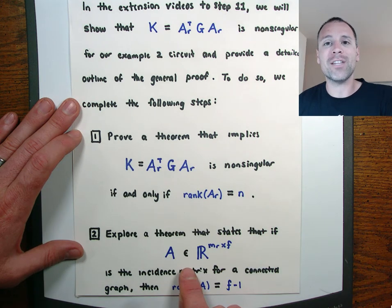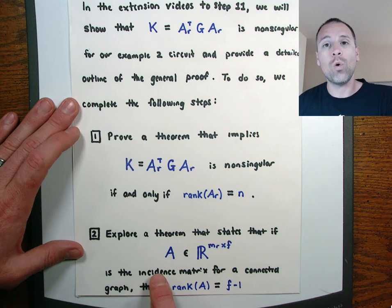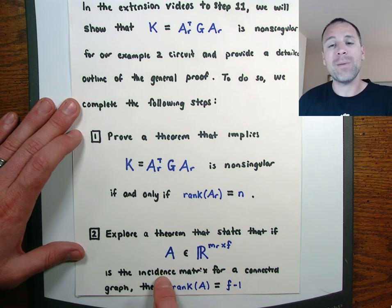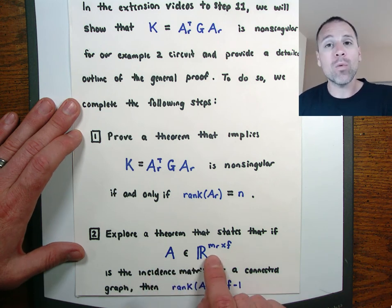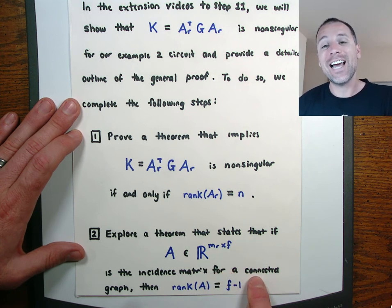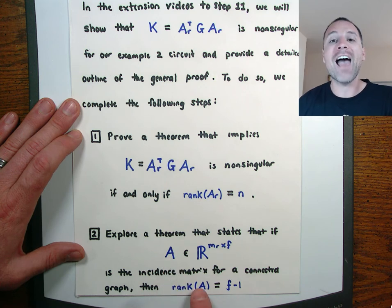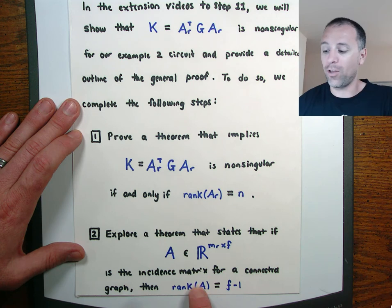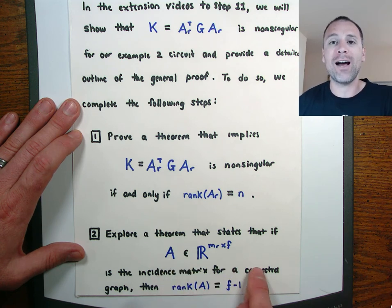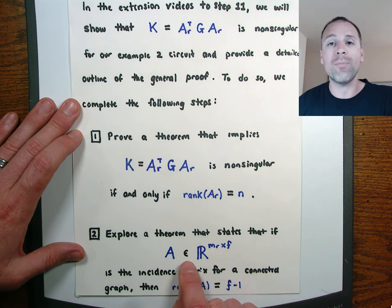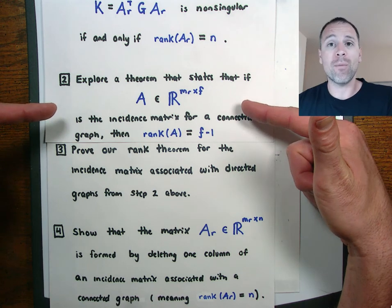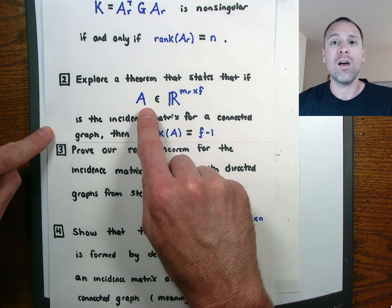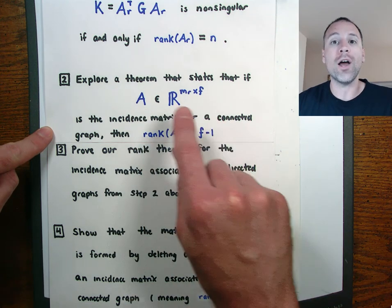In the second extension video, we're going to state and explore a theorem from graph theory: the incidence matrix corresponding to a connected graph with M rows and F columns will have F minus one linearly independent columns. In other words, any incidence matrix for a connected graph — if we look at all the columns and subtract one — will always yield a linearly independent set of vectors.